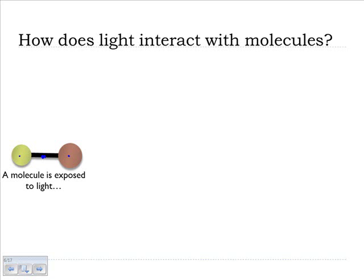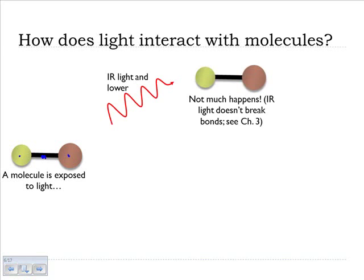First off, if the light, when I say lower, I mean wavelength, if the light has a wavelength at the IR range or lower, so IR, just to give you an idea, is the light that your remote controls use to communicate with your television. If your light is IR or lower, infrared or lower, nothing much happens. Those molecules might vibrate, they might rotate, or they might do absolutely nothing.